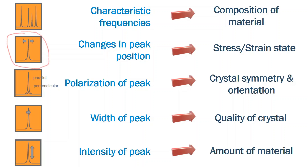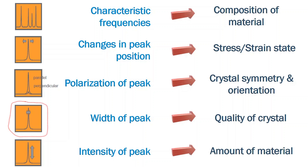Changes in the peak position correspond to a change in the strain state of your material. Raman scattering is highly polarization dependent, and by manipulating this we can actually identify the symmetry of the Raman modes that are detected. If you're looking at a single crystal sample, you can actually identify the orientation of that specimen. The full width half max of a solid material corresponds to the crystallinity of that material — the narrower the band, the higher the crystallinity; if it's broader, more amorphous.